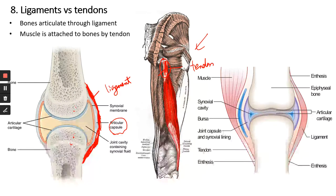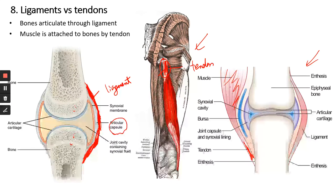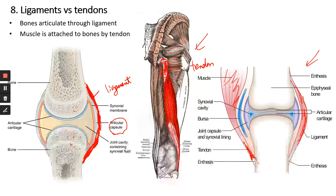So the difference: ligaments attach bone to bone, but tendons attach muscle to bone. In a diagram showing both structures, you have muscles with tendons keeping the muscle attached to the bone, and the ligament holds the two bones together.